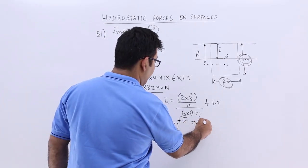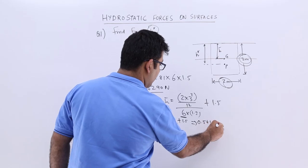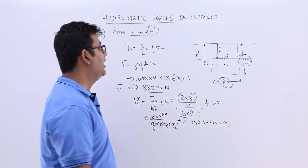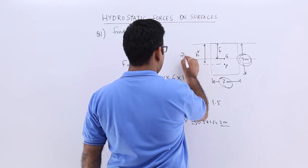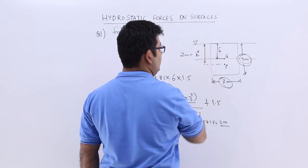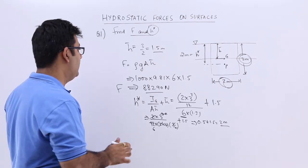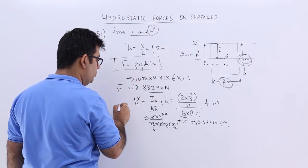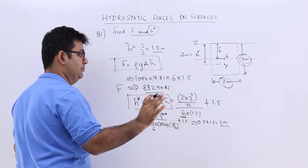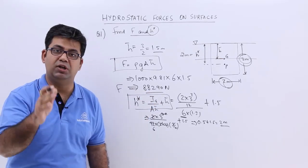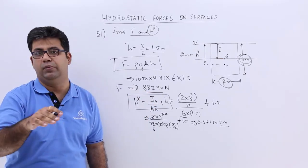so 1 by 2 is 0.5 plus 1.5 which is 2 meters. So the center of pressure is at 2 meters from the free surface. So this is how easy it is, you just have to remember these 2 mathematical formulas, that's it. Now let's move on to the next video and talk about the horizontal surface which is submerged in a liquid.